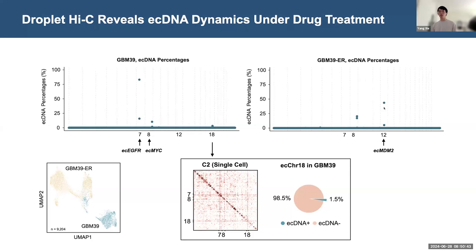This suggests that erlotinib treatment can not only select for existing ecDNA, but can also drive the generation of new ecDNA. This also suggests that single-cell Hi-C data can largely complement previous imaging-based studies on ecDNA, because the sequencing method is less biased and allows for the discovery of new ecDNA species.